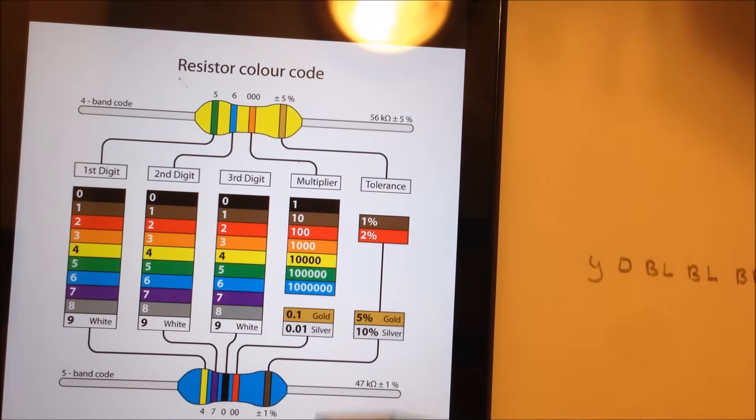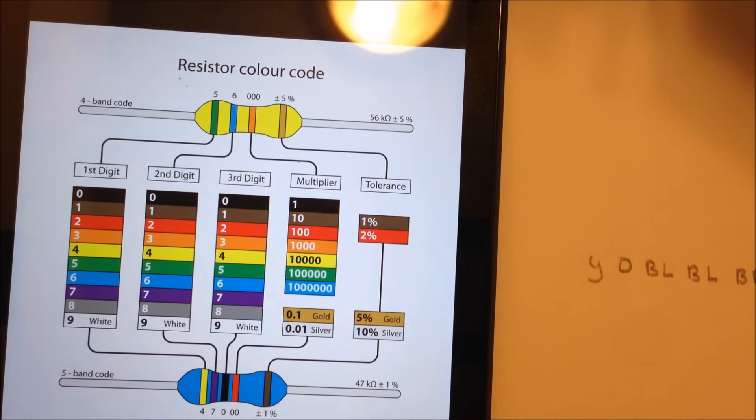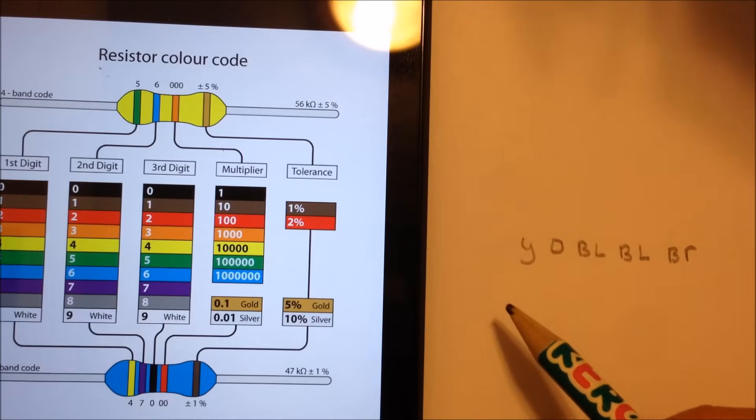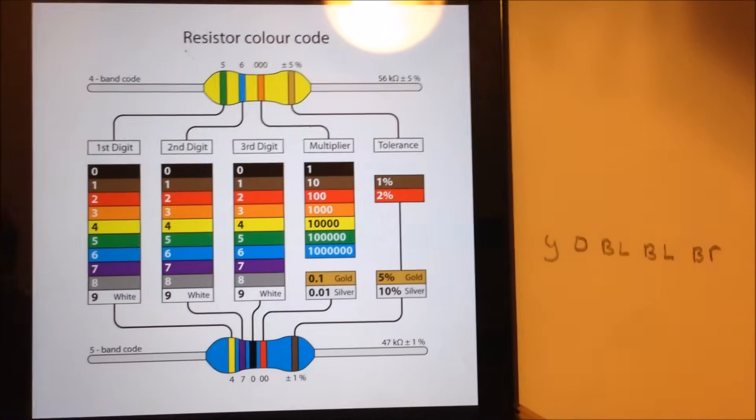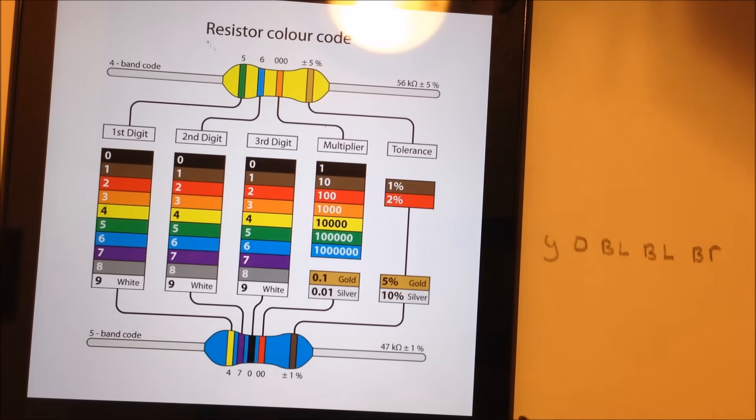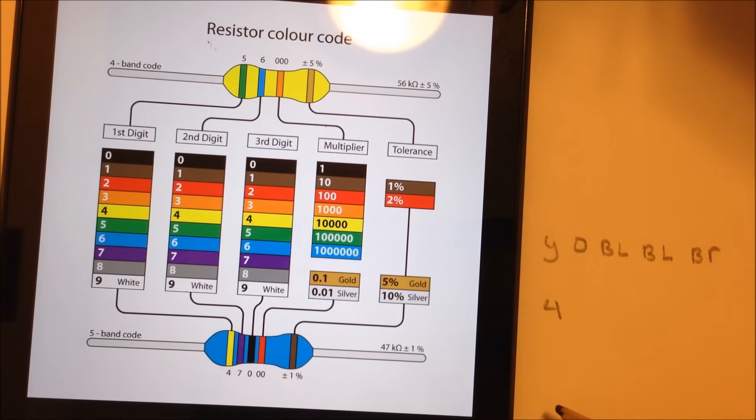All right, so let's go ahead and get our chart out again here. So now for this one, we have to use the resistor here that has five bands on it. So the first one I said was yellow - let's move that over - first one here is yellow, which is four, and then orange, which is three, and then black, which is zero.